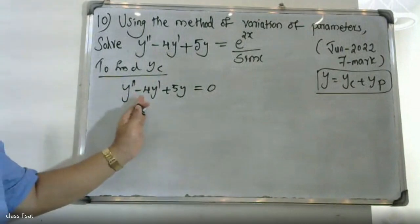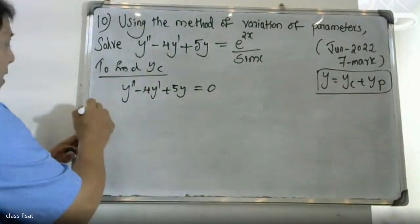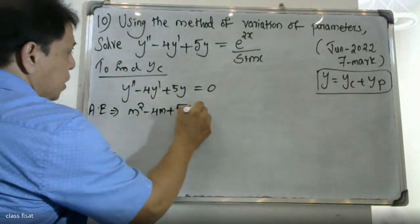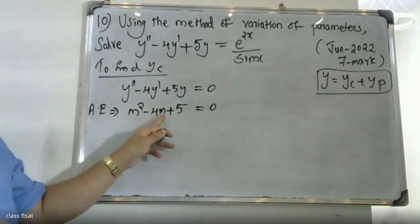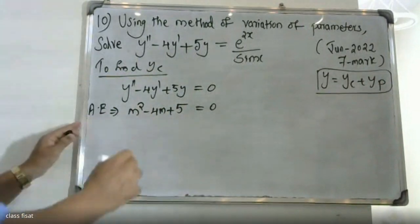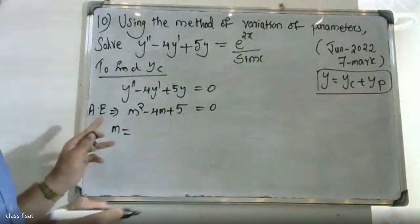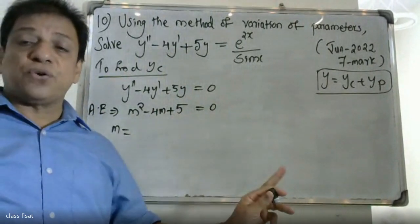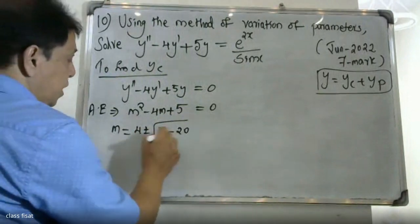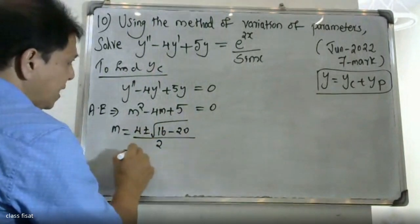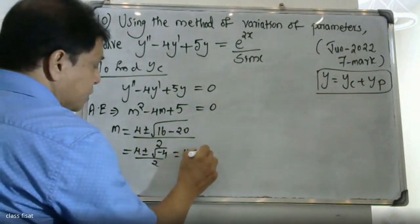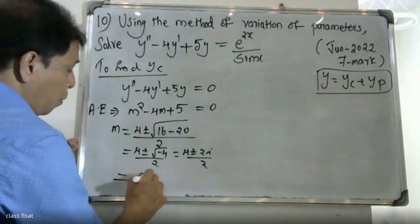So we set y'' - 4y' + 5y = 0. Using the quadratic formula: m = (-b ± √(b² - 4ac)) / 2a, we get m = (4 ± √(16 - 20)) / 2 = (4 ± √(-4)) / 2 = (4 ± 2i) / 2 = 2 ± i.